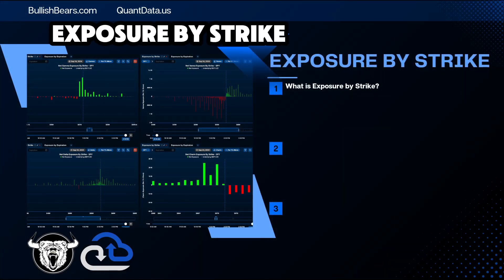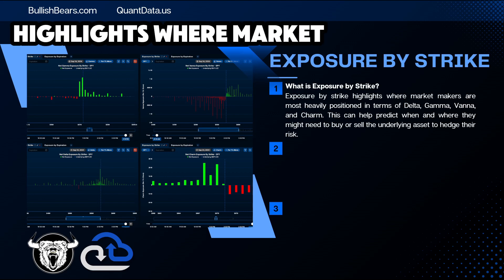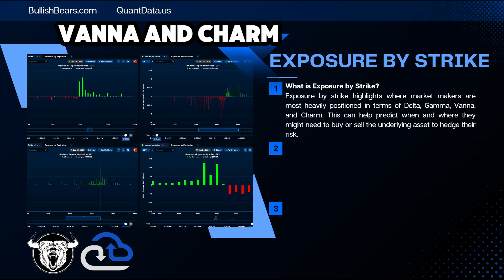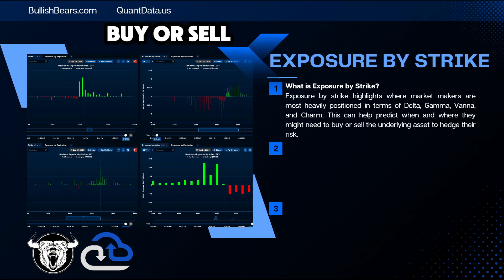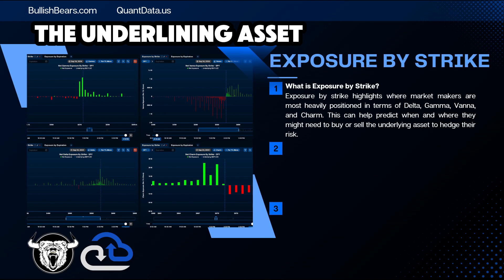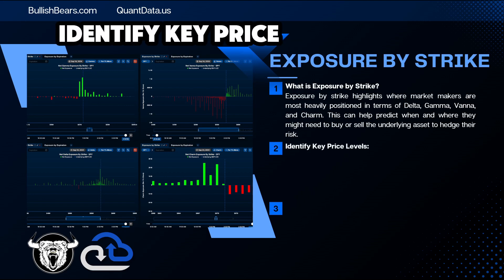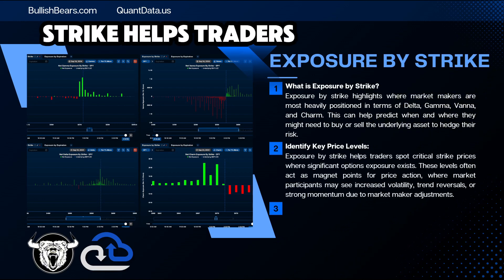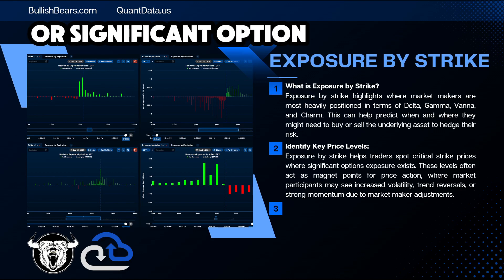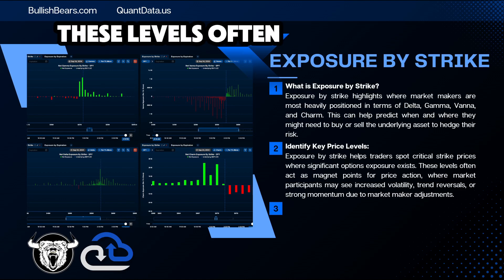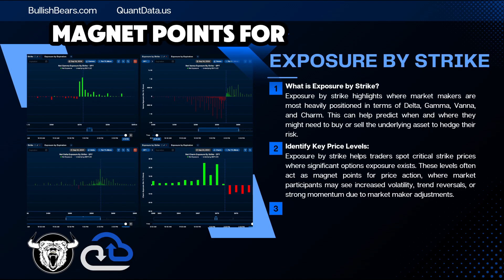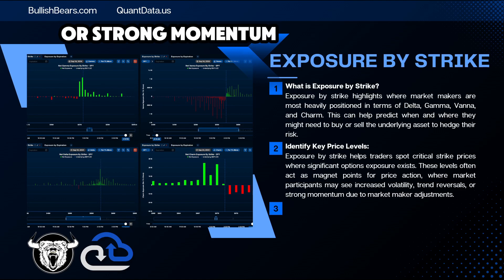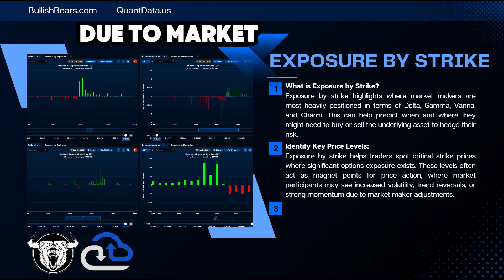So what is Exposure by Strike? Exposure by Strike highlights where market makers are most heavily positioned in terms of delta, gamma, vanna, and charm. This can help predict when and where they might need to buy or sell the underlying asset to hedge their risk. It also helps traders spot critical strike prices where significant option exposure exists. These levels often act as magnet points for price action where market participants may see increased volatility, trend reversals, or strong momentum due to market makers' adjustments.